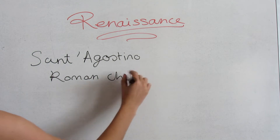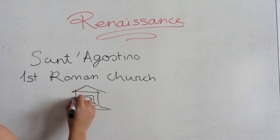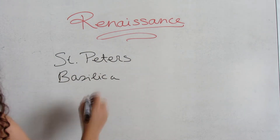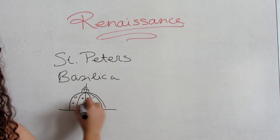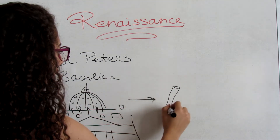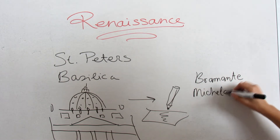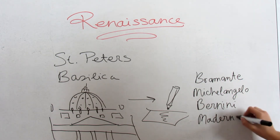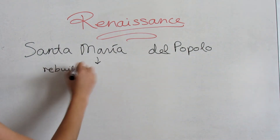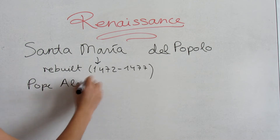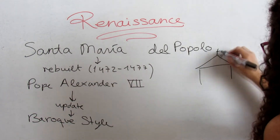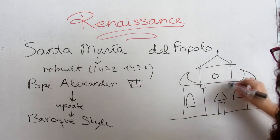Then we have Sant'Agostino, which is one of the first Roman churches built during the Renaissance. Now we have St. Peter's Basilica. St. Peter's is the most renowned work of Renaissance architecture, and remains one of the two largest churches in the world. Designed principally by Bramante, Michelangelo, Carlo Maderno and Bernini. And finally we have Santa Maria del Popolo, which was rebuilt by Baccio Pontelli and Andrea Bregno in 1472 to 1477 on the orders of Pope Sixtus, and was given to the congregation of Lombard friars in Rome.